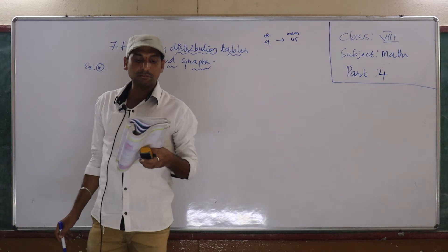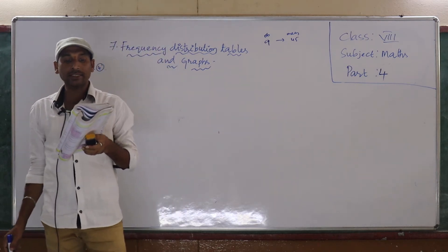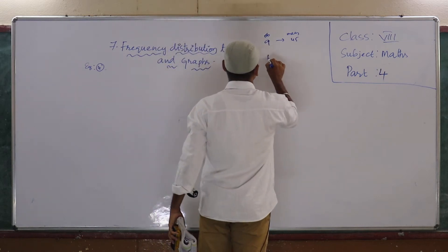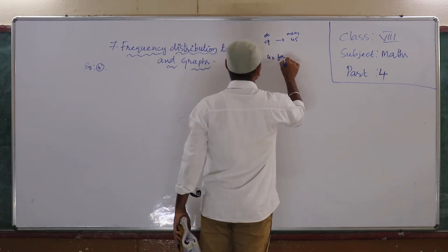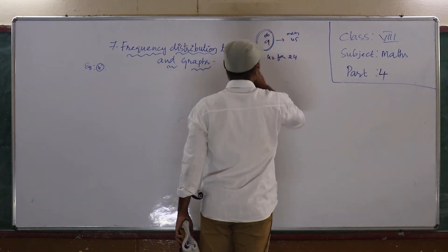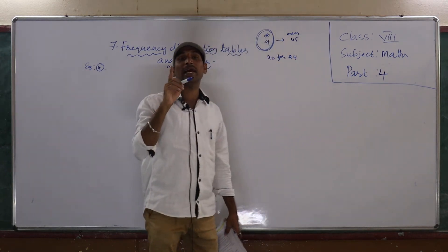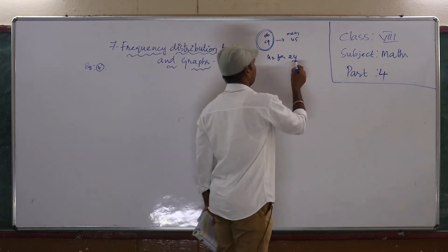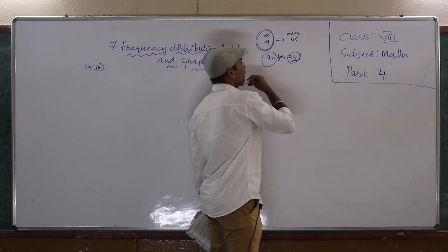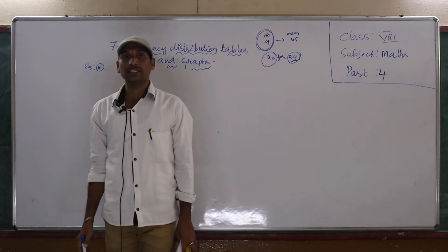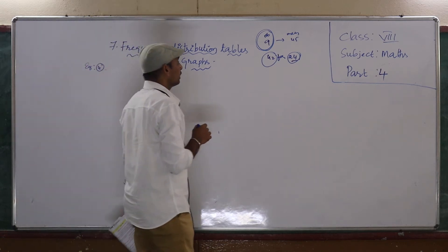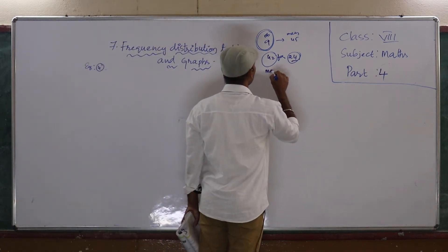an observation was wrongly taken as 42 for 24. 42 for 24 means, out of 9 observations, there is one observation, 24. But instead of 24, by mistake, they were written as 42. Yes, means they are taking more value.